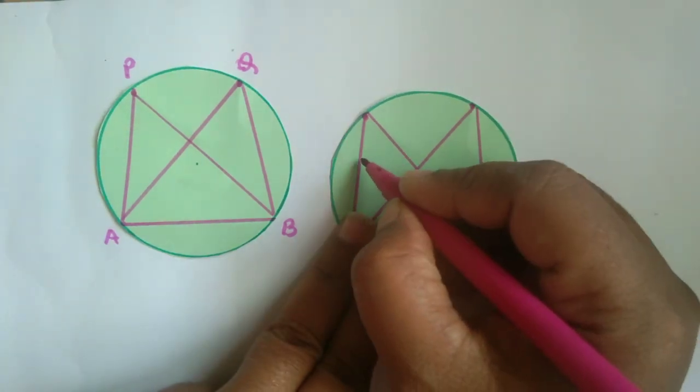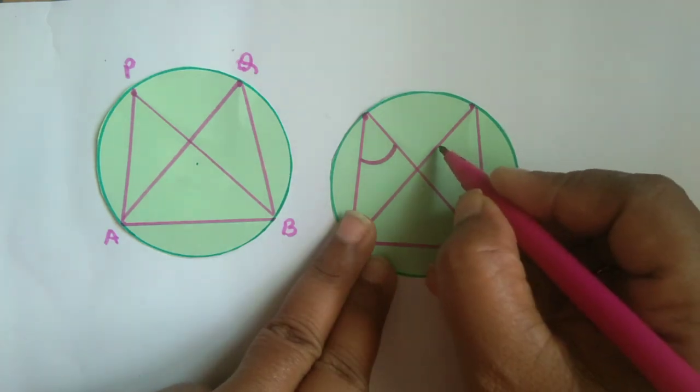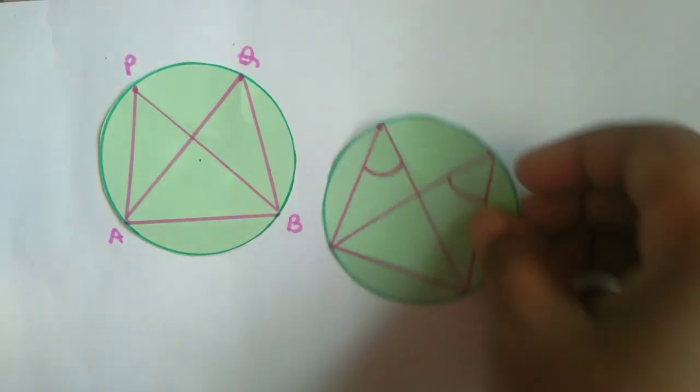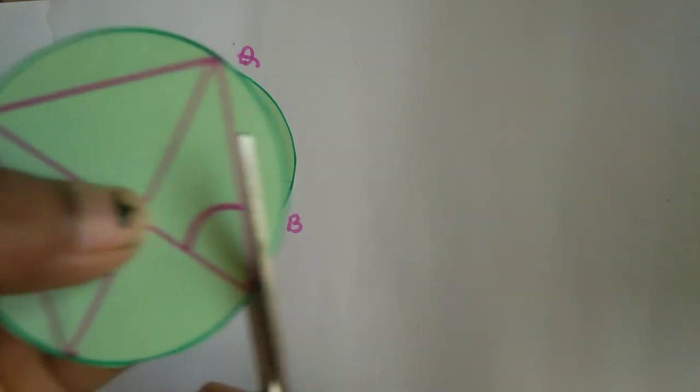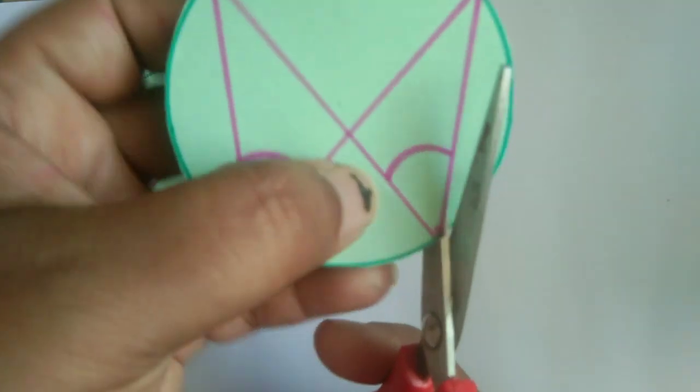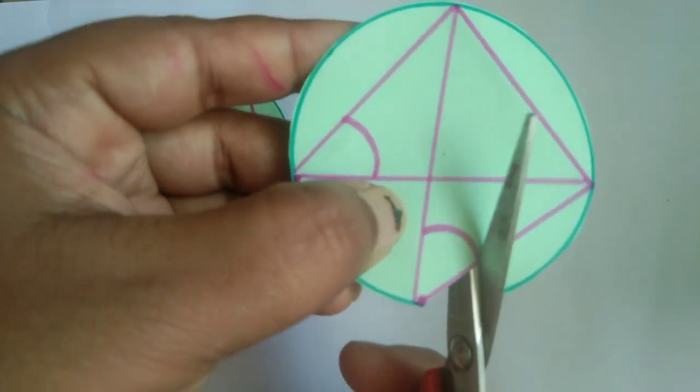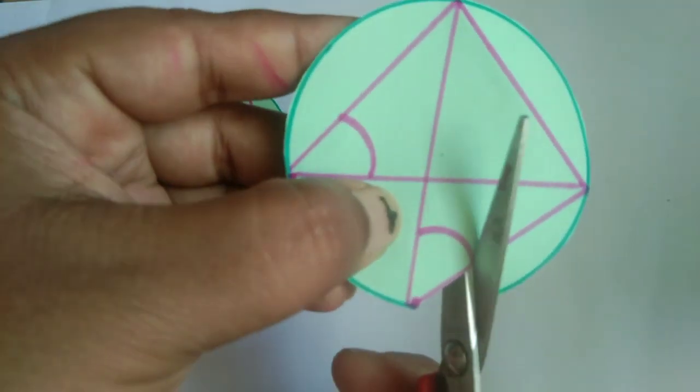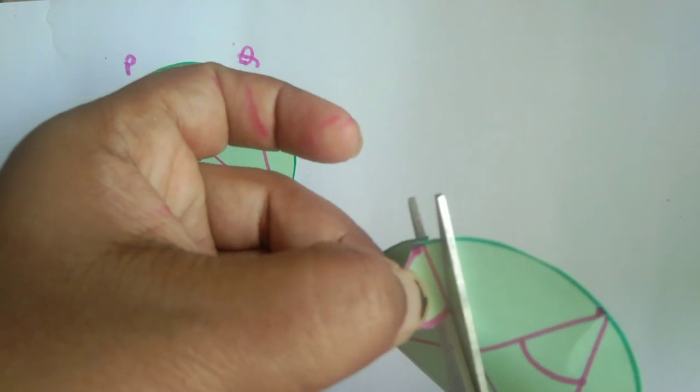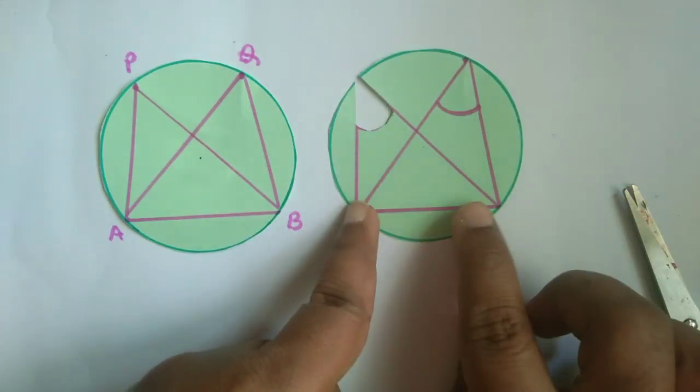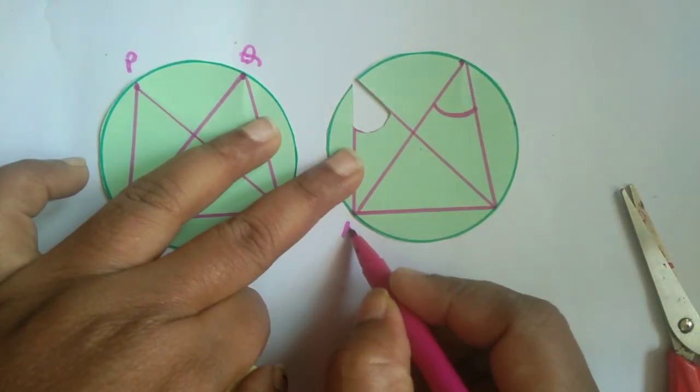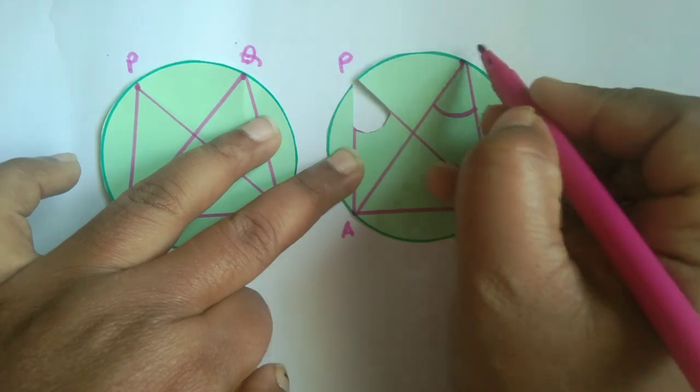Here you can see this angle. I will mark it and then cut out the angle like this. You can see that I have cut out this angle. The naming remains the same - AB, with angles P and Q.